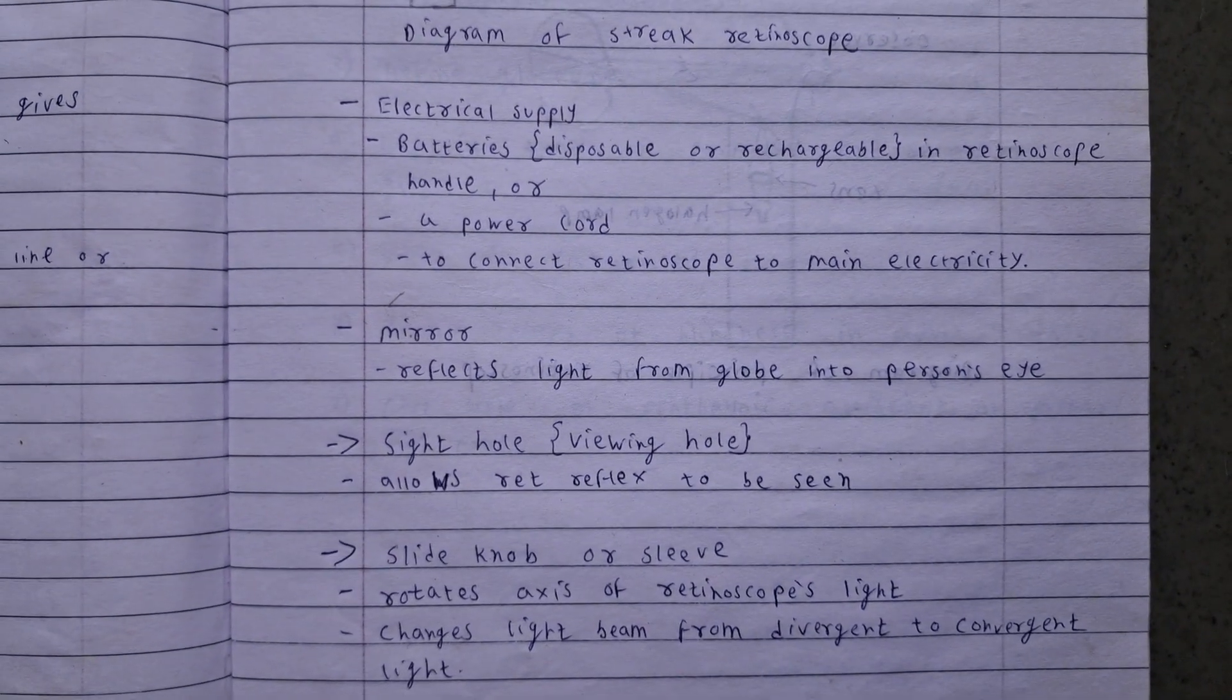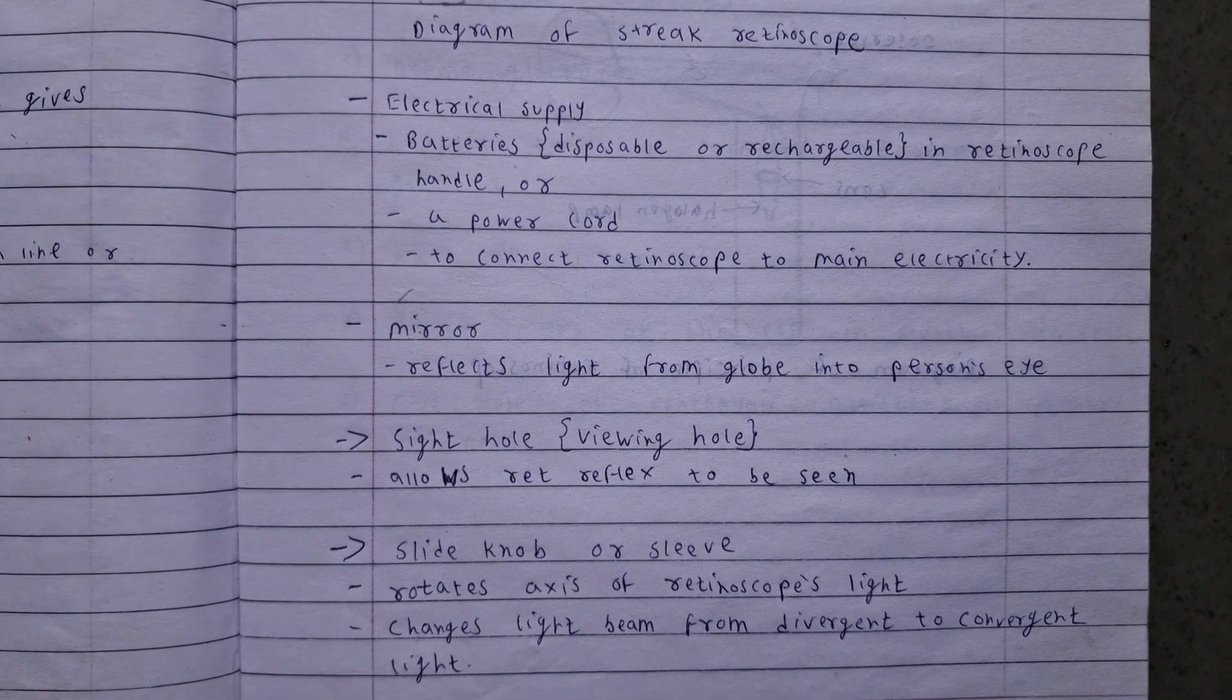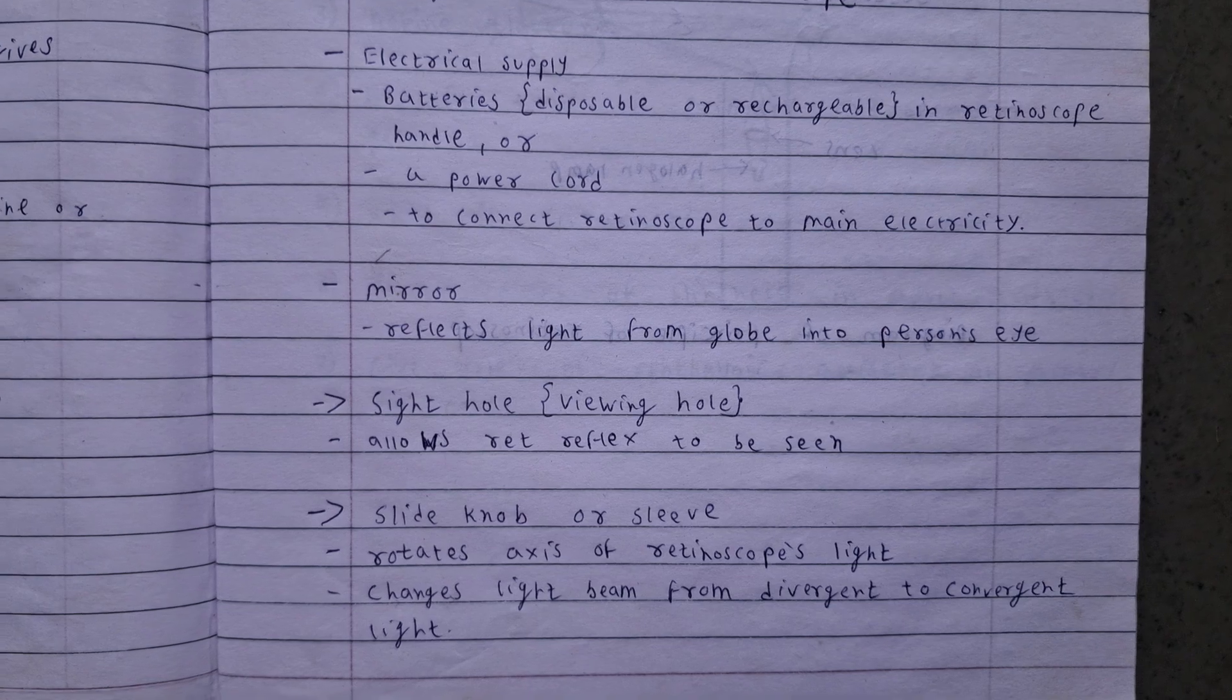Mirror reflects light from globe into person's eye. Sight hole viewing hole allows red reflex to be seen.